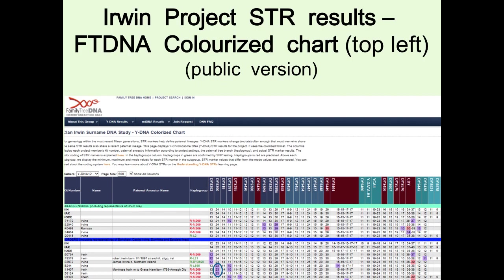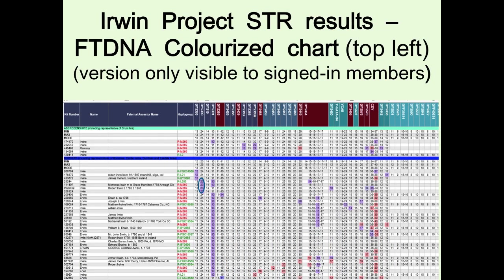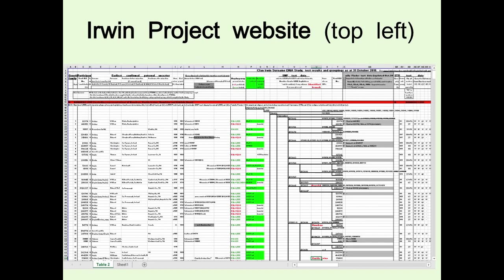The modal value there is 29, and pink is 30. There's also a private version you only get if you're signed in to your personal FTDNA page. It's still only two colors, and all you've got is your STR markers. My own private project website has 250 columns and is 500 rows long, so I have to show it bit by bit.